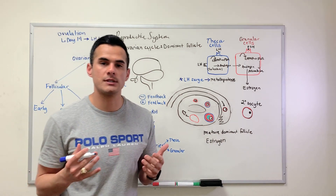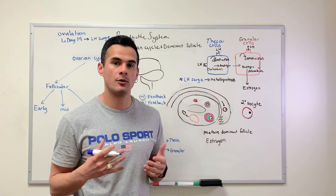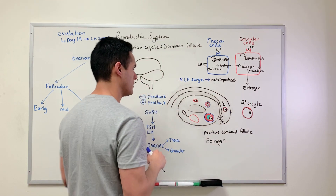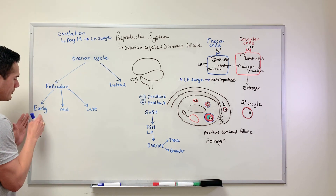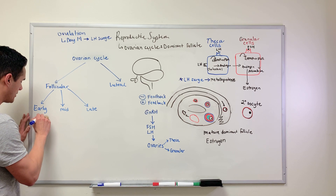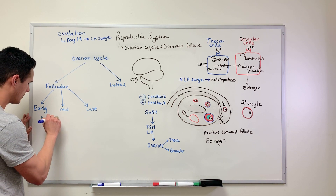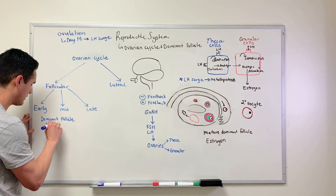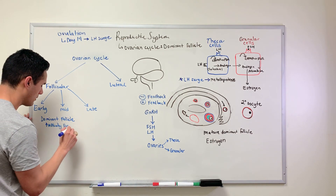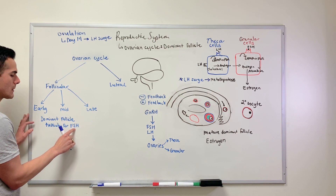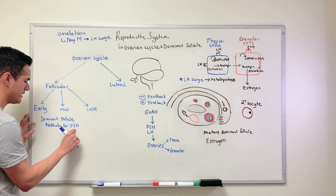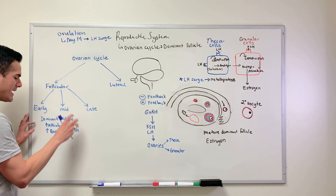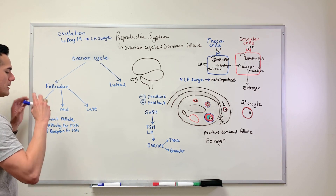Before getting into what's going on from early to mid to late, we need to remember that we're trying to get to our dominant follicle, because there are other follicles competing for resources — competing for estrogen — so that it can provide nutrients for our secondary oocyte. Going from early to mid follicular phase, we're establishing our dominant follicle. The dominant follicle has a high affinity for follicle stimulating hormone due to increasing receptors, and because it has a lot of FSH receptors, it's going to have lots and lots of estrogen.